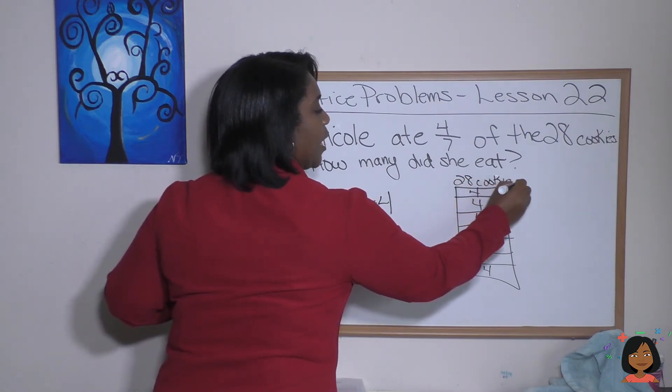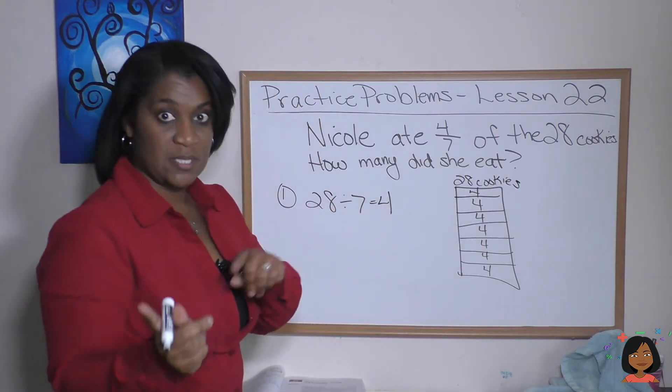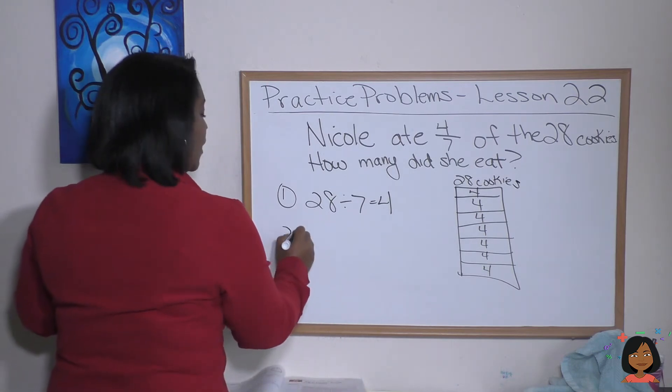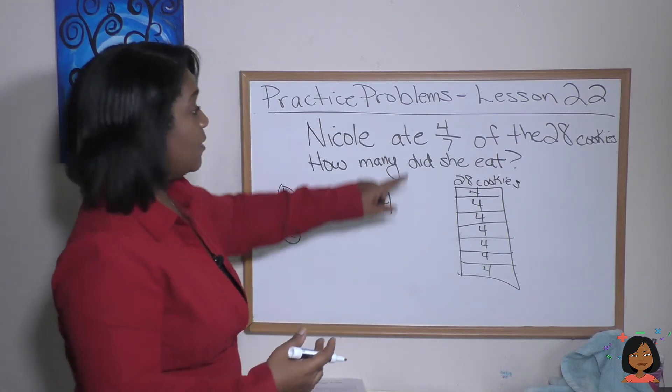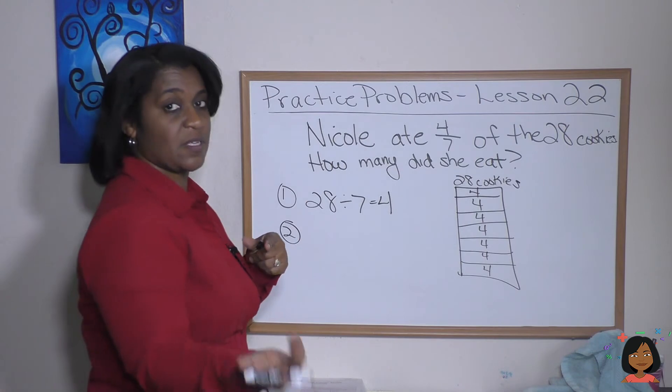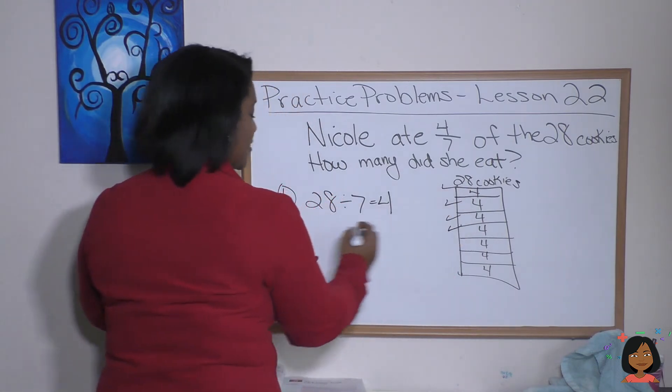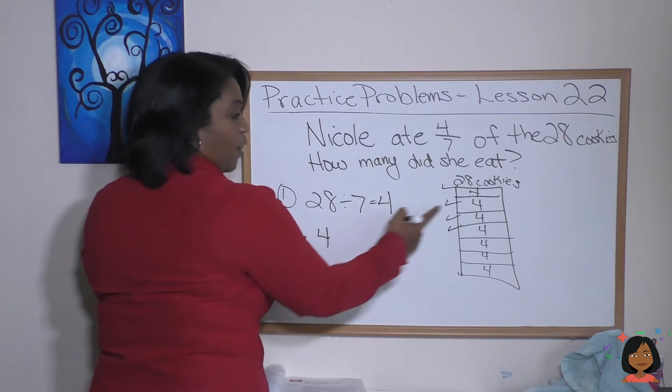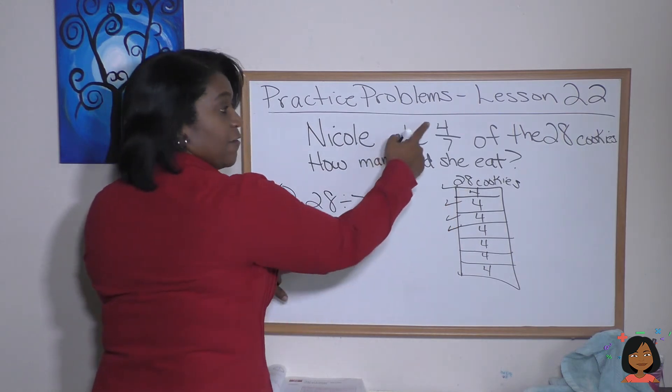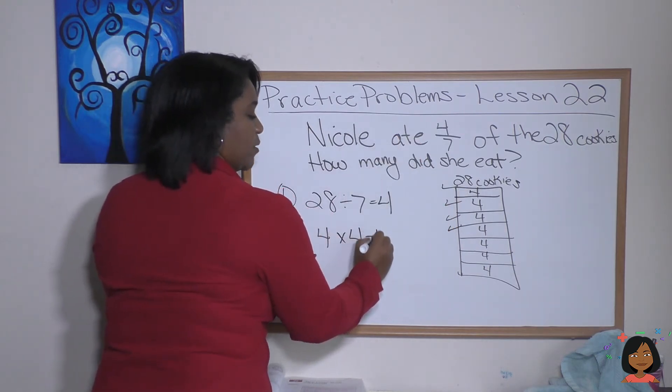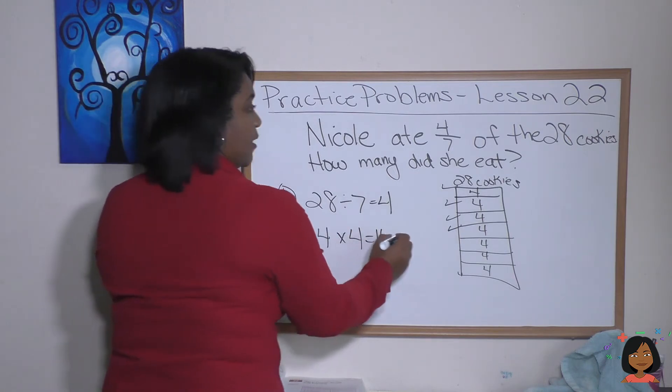Step two is I'm gonna highlight four of my groupings. Here we go: one, two, three, four. That is the same thing as saying 4 times 4 equals 16, which means that Nicole ate 16 of the 28 cookies. As I said, don't judge, I was hungry.